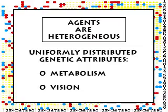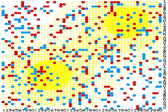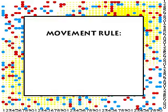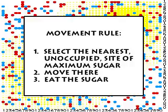Metabolisms are randomly distributed across agents and range from one to five sugars per artificial day. Vision is also randomly distributed across agents with values ranging from one to ten. Agents with vision six can see six units in the four lattice directions — north, south, east, and west. Agents lack diagonal vision. For each agent, the rule of behavior is as follows: from all lattice positions within your vision, select the nearest unoccupied position of maximum sugar, go there, and eat the sugar.